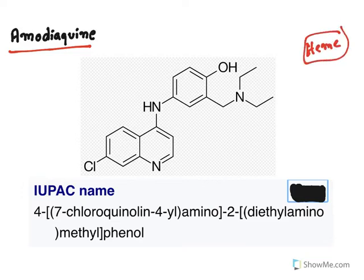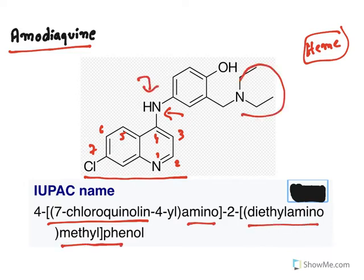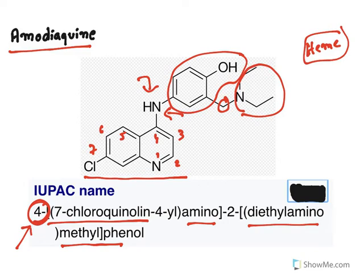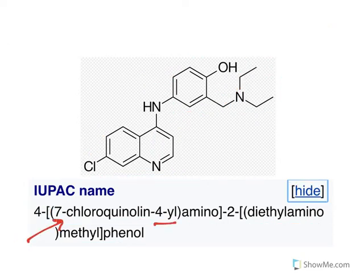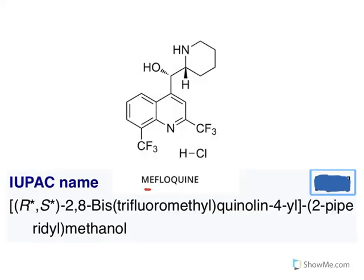The mechanism of action of amodiaquine is very similar to chloroquine — it releases heme from hemozoin, which is toxic to plasmodium. At the seventh position a chlorine substitution is present. At the fourth position the substitution is amino — specifically a diethylaminomethylphenol group, where the phenol hydroxyl is present. It is named as 7-chloro-4-amino-2-(diethylaminomethyl)phenol.